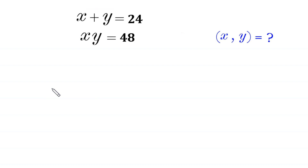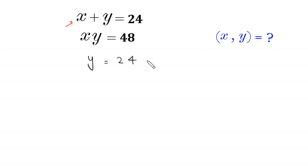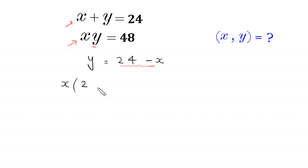Welcome to this problem. We need to solve the system of equations: x plus y equals 24 and x times y equals 48. Our job is to find all possible values of x and y. Starting from the first equation, we move x to the right-hand side, giving us y equals 24 minus x. In the second equation, we replace y with this value, so it becomes x times (24 minus x) equals 48.